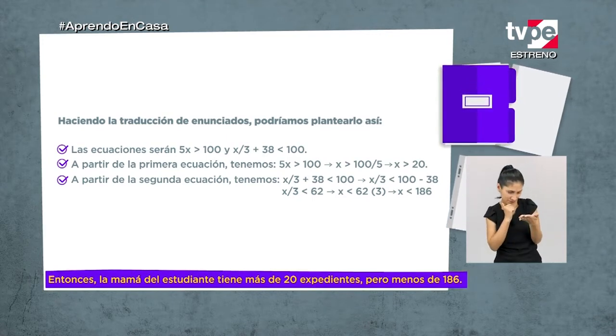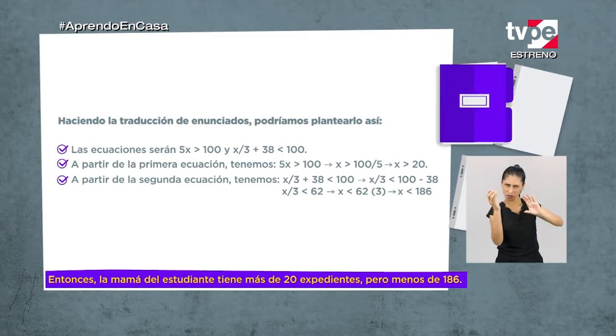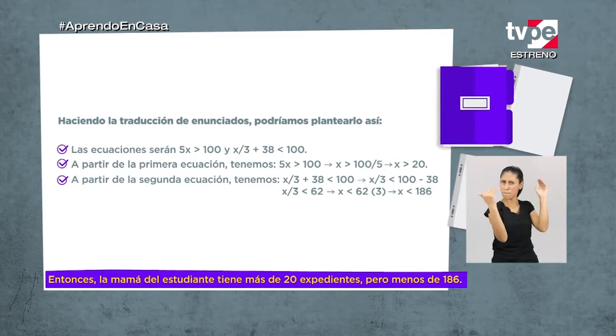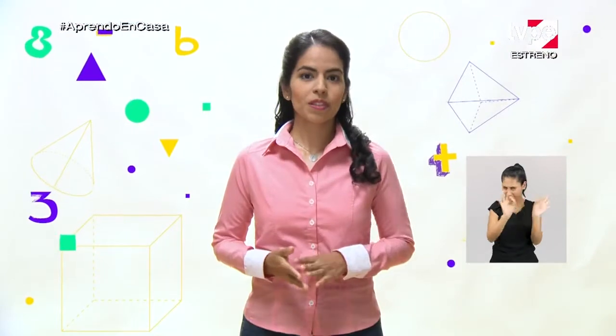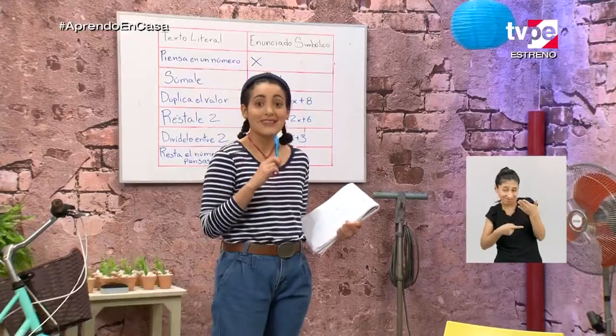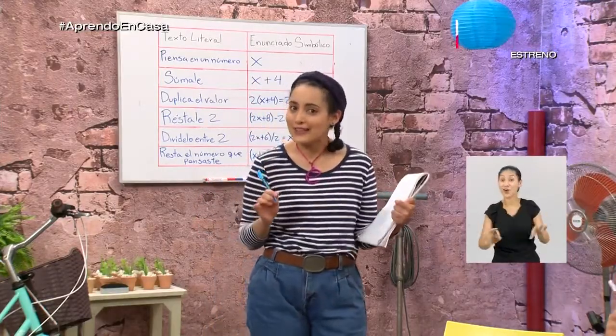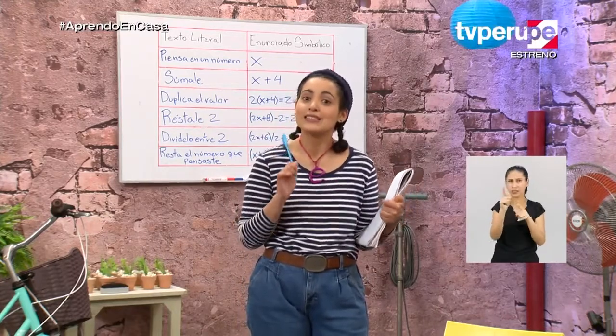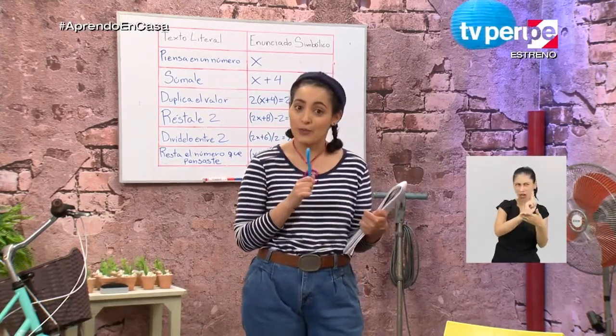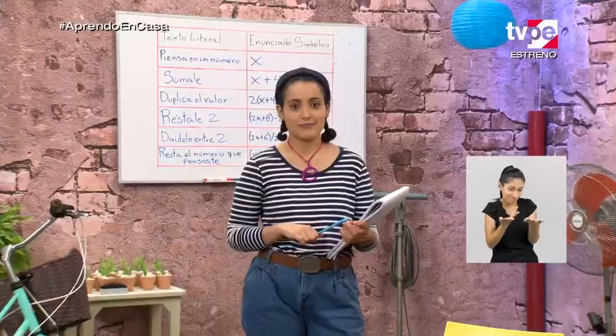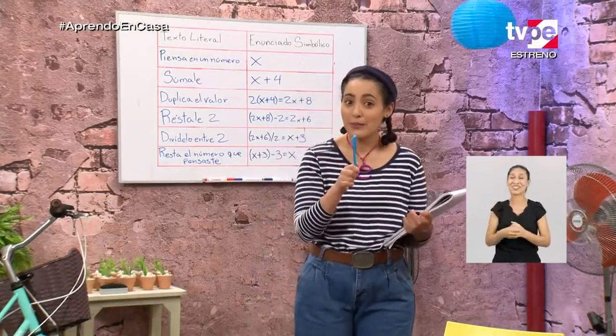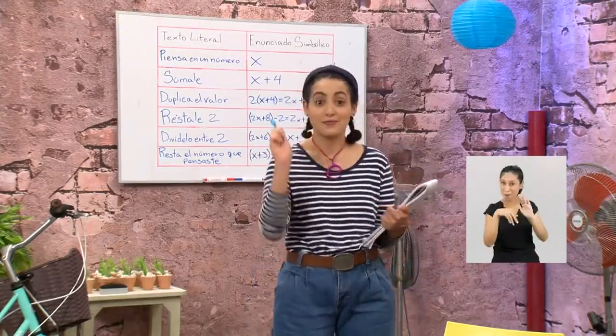La mamá de Juan tiene más de 20 expedientes pero menos que 186. Es el mismo procedimiento, solo que el símbolo es diferente: puede ser mayor o igual que, o menor o igual que. Es importante la simbolización de lo que se dice en el reto para plantear la ecuación o inequación; de lo contrario, será muy difícil encontrar la respuesta correcta. En el próximo bloque de razonamiento matemático, revisaremos más situaciones.